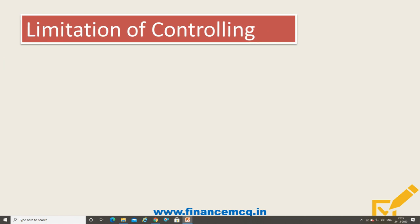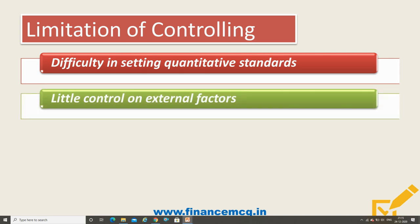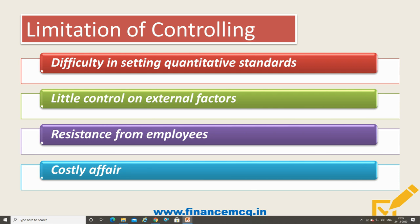We will move to limitations of controlling. The first limitation is difficulty in setting quantitative standards — the control system loses some of its effectiveness when standards cannot be defined in quantitative terms. The second limitation is little control on external factors — an enterprise cannot control external factors such as government policies, technological advancement, etc. The third limitation is resistance from employees — employees see it as a restriction on their freedom; for instance, employees might object when kept under strict watch with closed circuit television, that is CCTV. The fourth limitation is that controlling is a costly affair, as it involves a lot of expenditure, time, and effort. A small enterprise cannot afford to install an expensive control system.